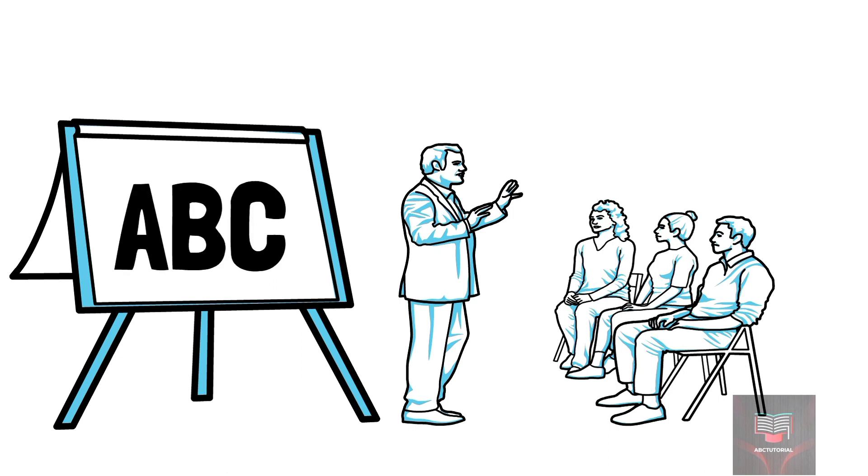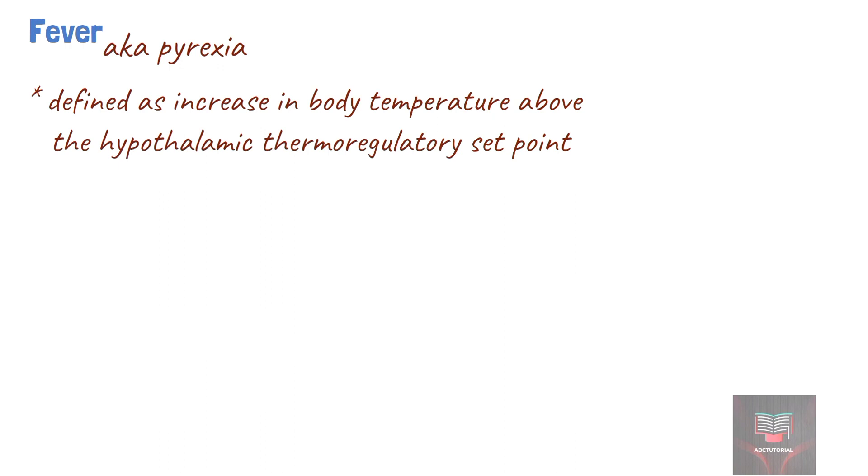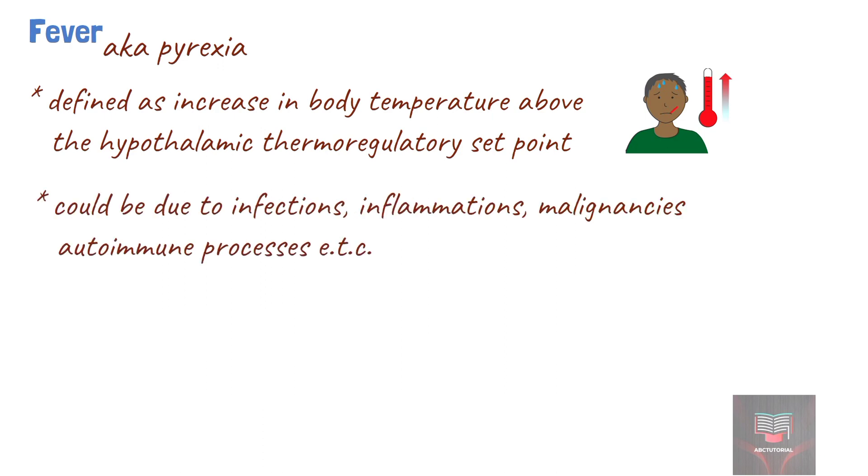Welcome to ABC tutorial. Today we'll be talking about fever. Fever, also known as pyrexia, is the elevation of an individual's core body temperature above a set point regulated by the body's thermoregulatory center in the hypothalamus. This increase in the body's set point temperature is often due to a physiological process brought about by infectious causes or non-infectious causes such as inflammation, malignancies, or autoimmune processes.